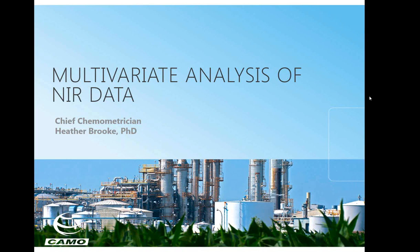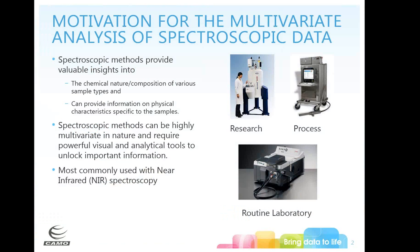Today we're going to talk about multivariate data analysis for NIR data. Our motivation for doing multivariate analysis on spectroscopic data is that spectroscopic data is multivariate by nature — you have many, many wavelengths. Spectroscopy gives us valuable insights into chemical nature and the composition of different sample types.